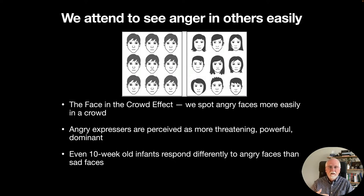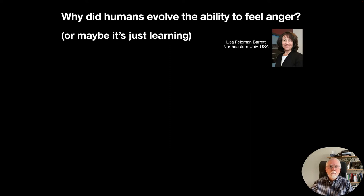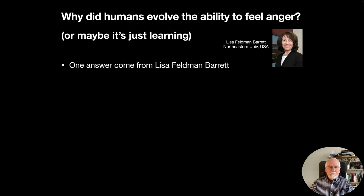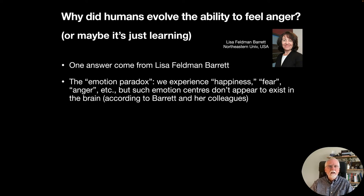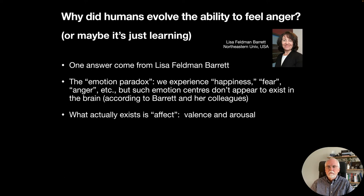Why did humans evolve the ability to feel anger? Lisa Feldman Barrett at Northeastern University would perhaps say it's all about learning. She has argued for what she calls the 'emotion paradox': we experience happiness, fear, anger, and so on, but we don't really find specific emotion centers in the brain — no dedicated happiness, fear, or anger region.